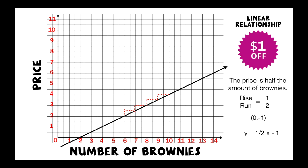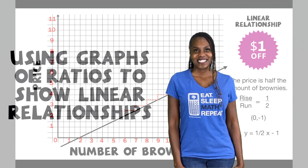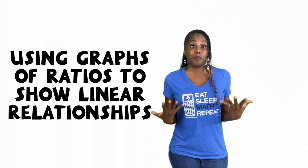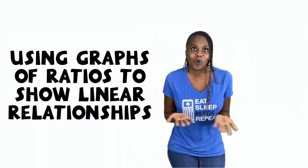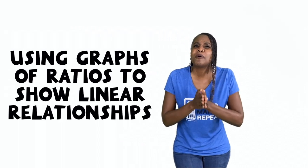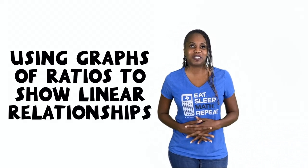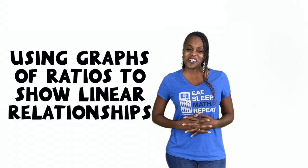How does that change my equation? My slope stays the same, but instead of the equation just being y = (1/2)x, I have to account for that dollar-off coupon. So it's y = (1/2)x - 1. Not only are you able to show proportional relationships through graphs, you can also show how proportional relationships are linear and have a linear relationship to them as well. Hope you liked this video — see you next time.